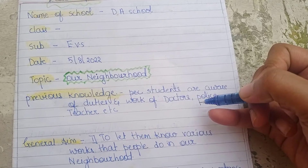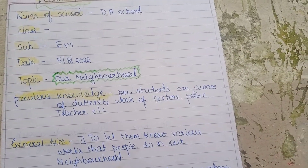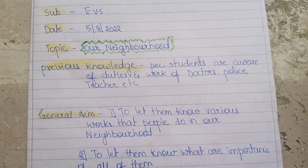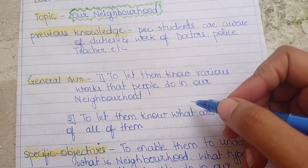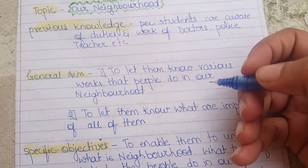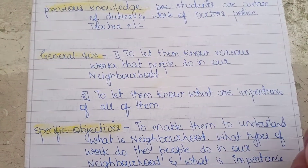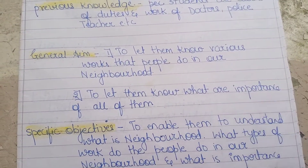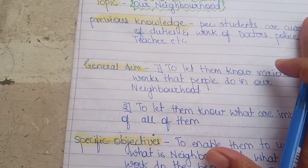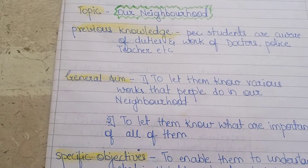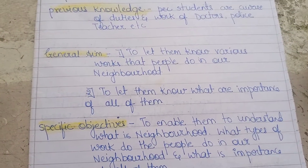Here you can see the previous knowledge section — students are aware of many types of work or duties, so you can write like this. For the general aim, we want to let them know about the neighborhood and the work that people do, like doctors and engineers, and the importance of all the work that people do in our neighborhood.